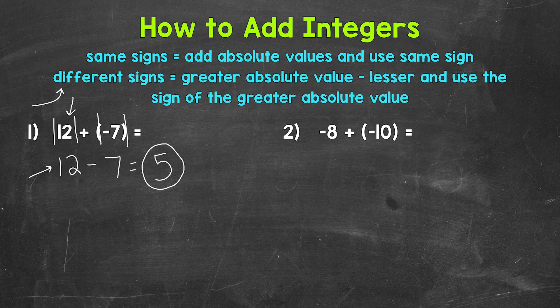So a quick recap here. Basically, we forgot about any negatives because we were working with absolute values. We then found the difference between the absolute values. And the answer takes the sign of the greater absolute value from the original problem.